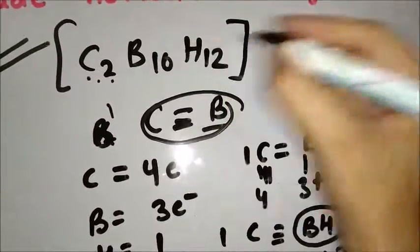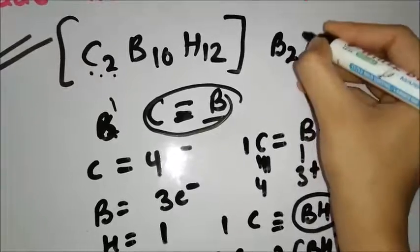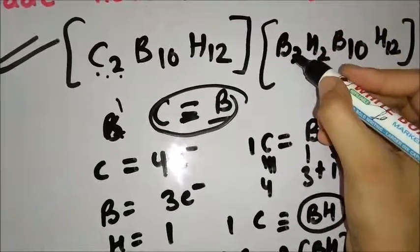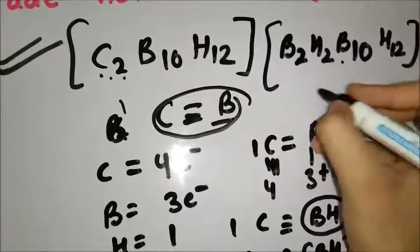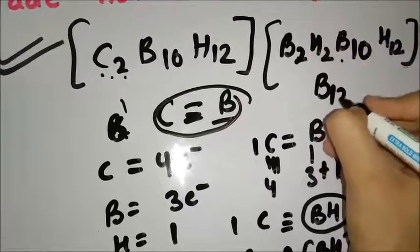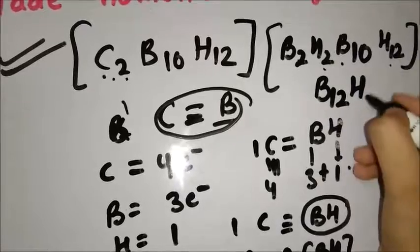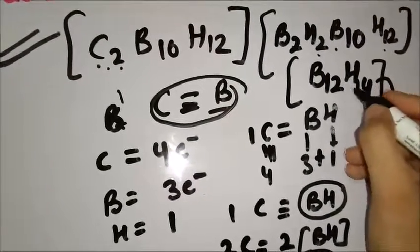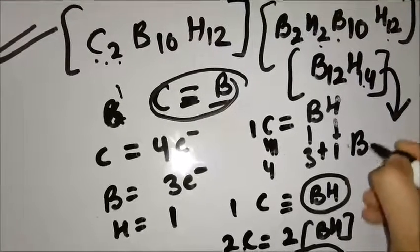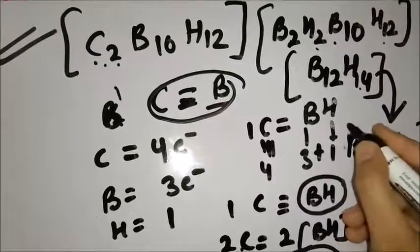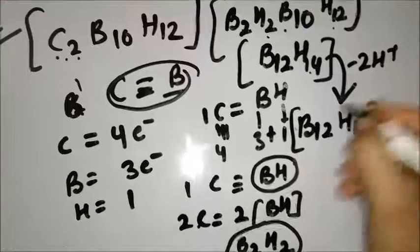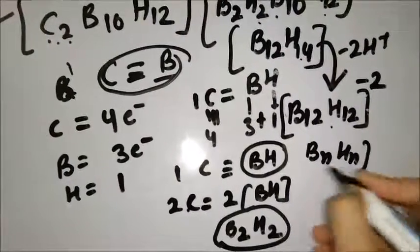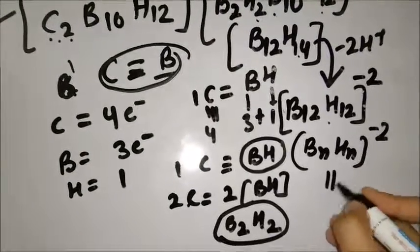Replace C₂ with B₂H₂ in C₂B₁₀H₁₂, giving B₂H₂B₁₀H₁₂. Add the total borons individually: 10 + 2 = 12, and total hydrogens: 2 + 12 = 14. Now apply borane cluster rules: release 2 H⁺ to get B₁₂H₁₂ with a 2 negative charge. BₙHₙ minus 2 gives you the structure closo. So the Wade nomenclature for this carborane is closo.